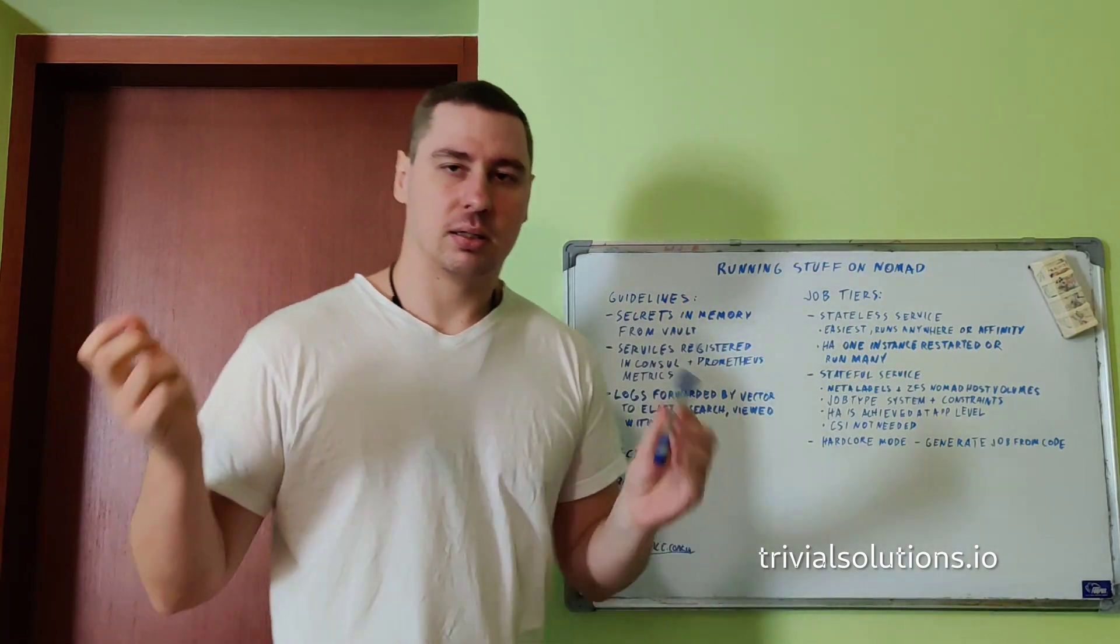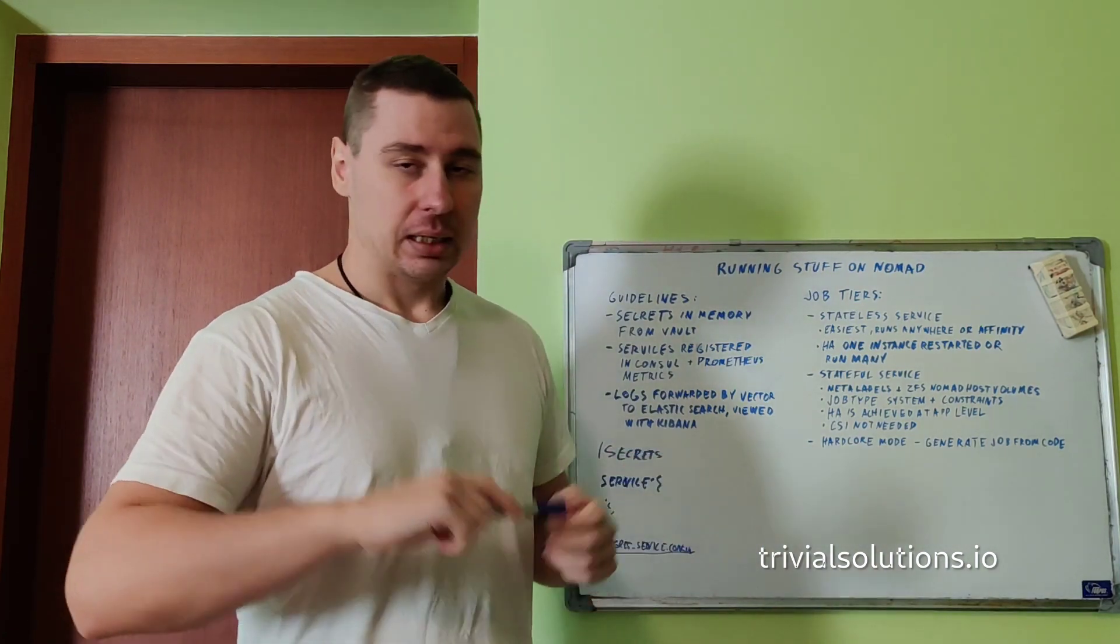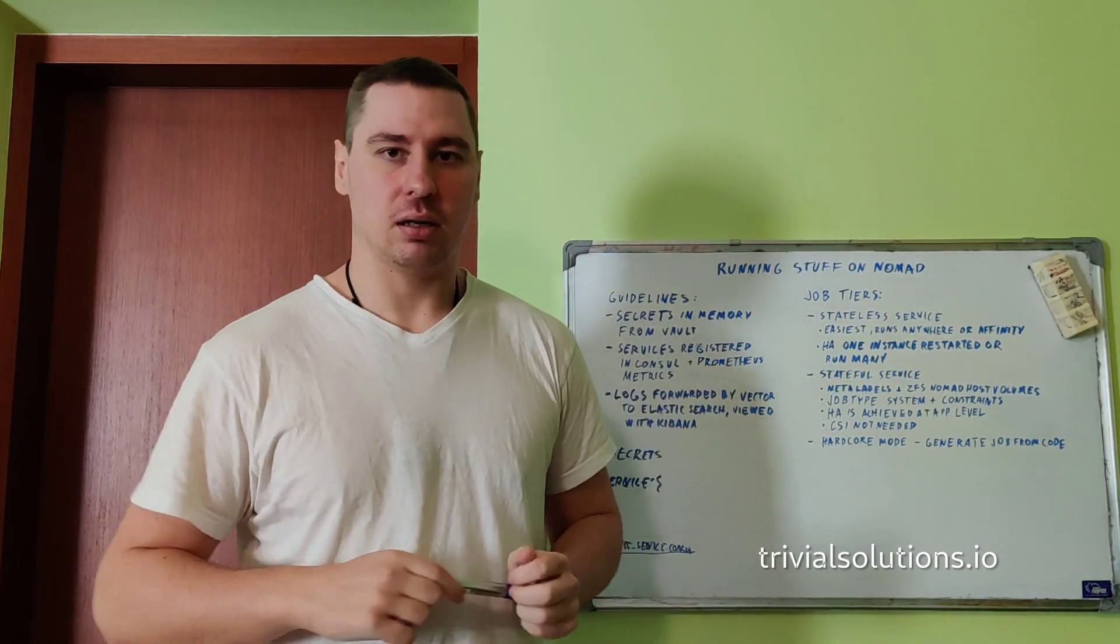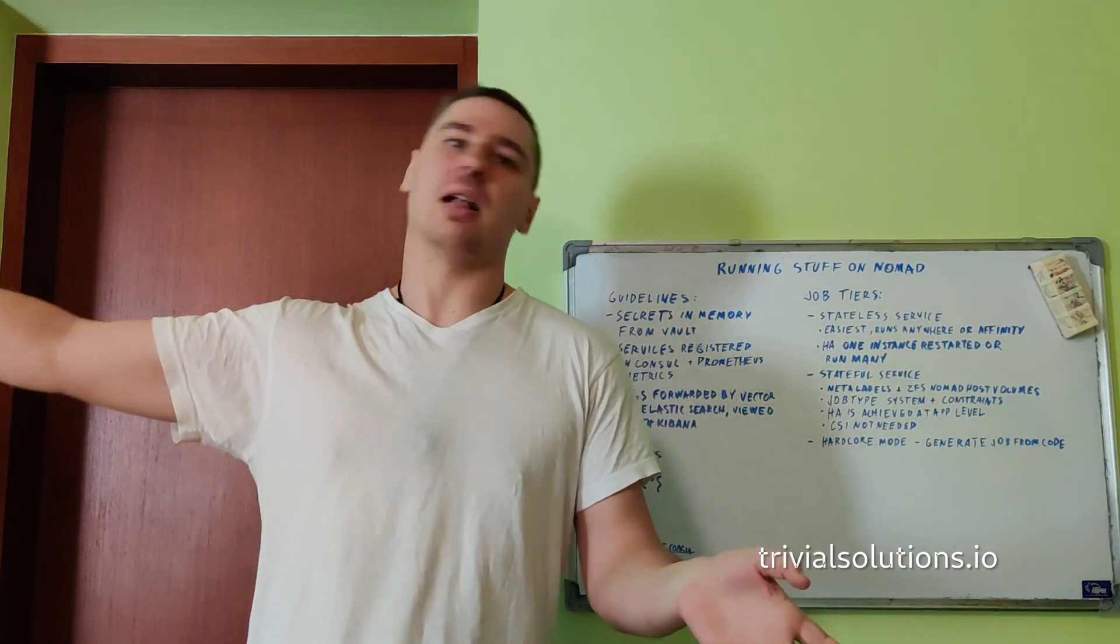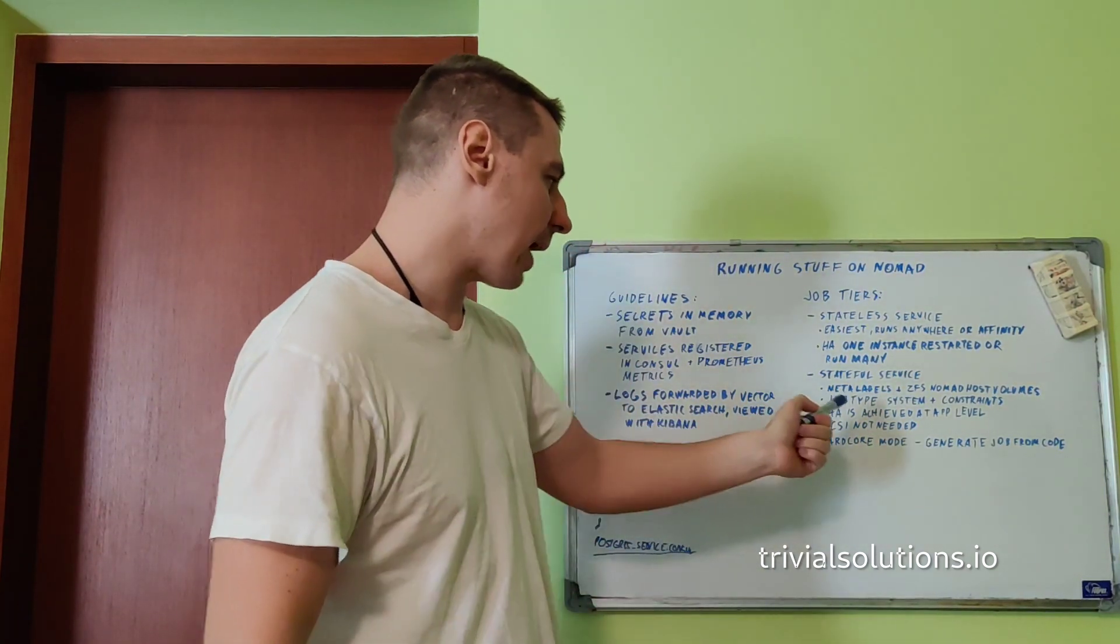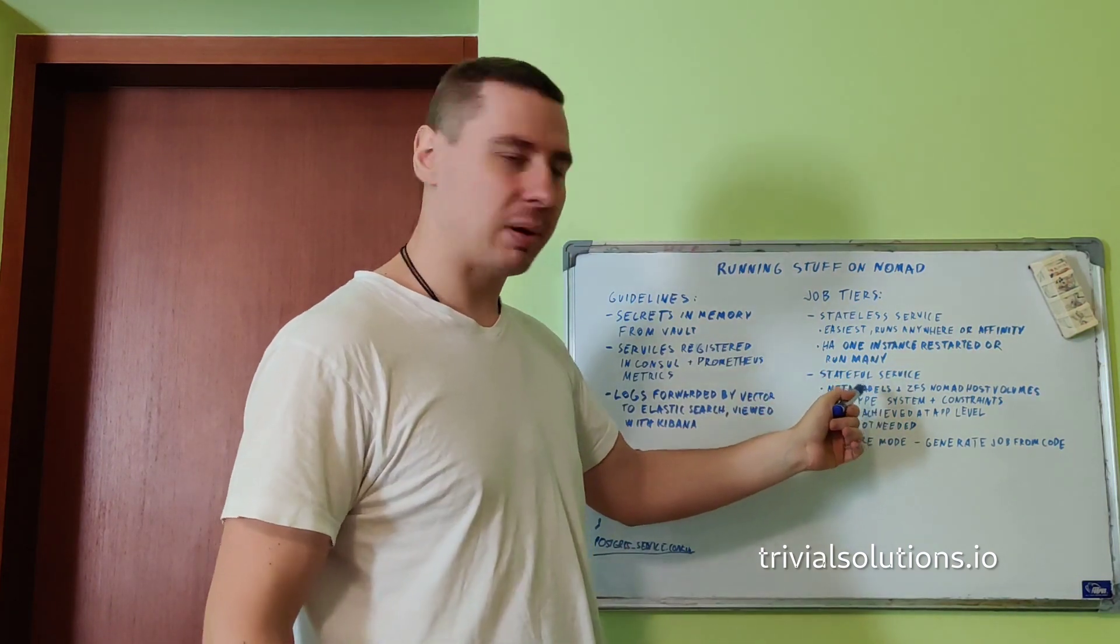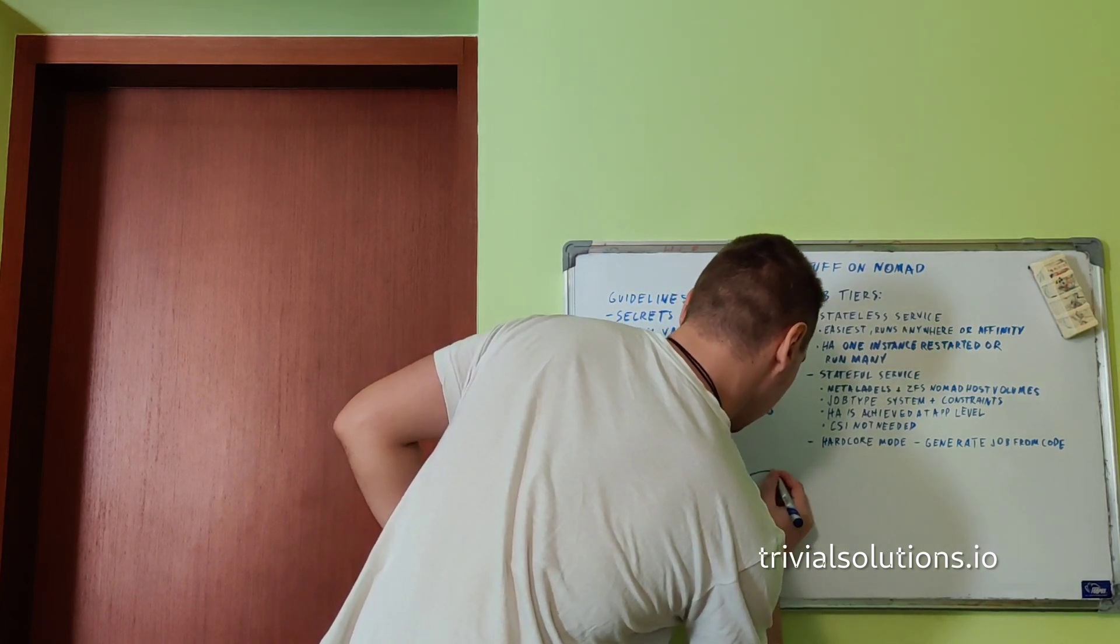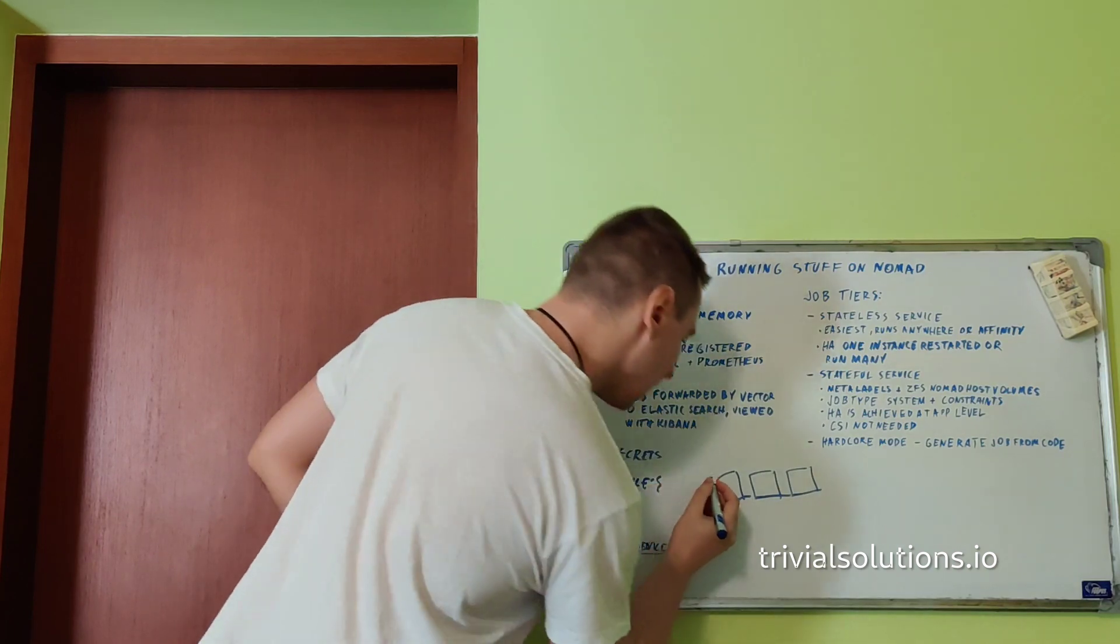Another thing is I run stateful services. I run databases, I run blockchain nodes, all sorts of stuff in a stateful manner. How do you do that in Nomad? Obviously what applied in stateless service doesn't apply here because you have a Postgres instance running with its database. You can't just reschedule it somewhere else, you lose all your data. So what do you do? You add a meta label on a node that you want to run, say, Postgres for something. You add labels on those nodes. Say you have three servers and you want two of these servers to run the Postgres node, so you add a label on these two nodes.